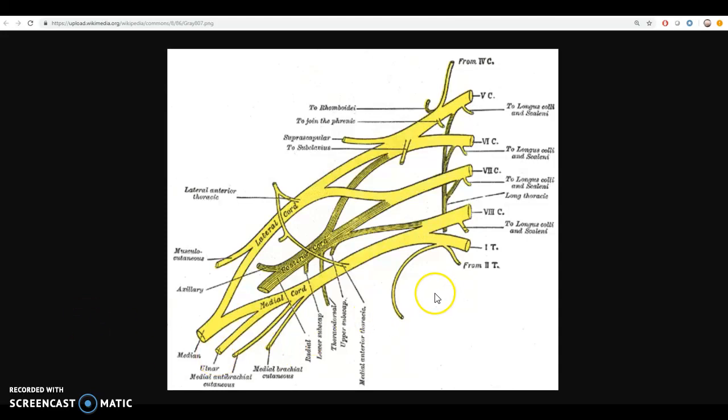This would be looking at the right limb as if the person were laying on their back, ventral side up, and you can see the spinal nerves that give rise to the brachial plexus.